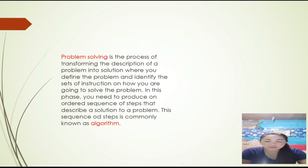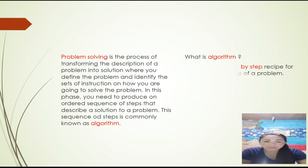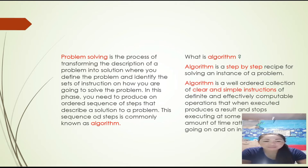Problem solving is the process of transforming the description of a problem into a solution where you define the problem and identify the set of instructions on how you are going to solve it. You need to produce an ordered sequence of steps that describe a solution — commonly known as an algorithm. An algorithm is a step-by-step recipe for solving an instance of a problem: a well-ordered collection of clear and simple instructions that when executed produces results and stops in a finite amount of time.